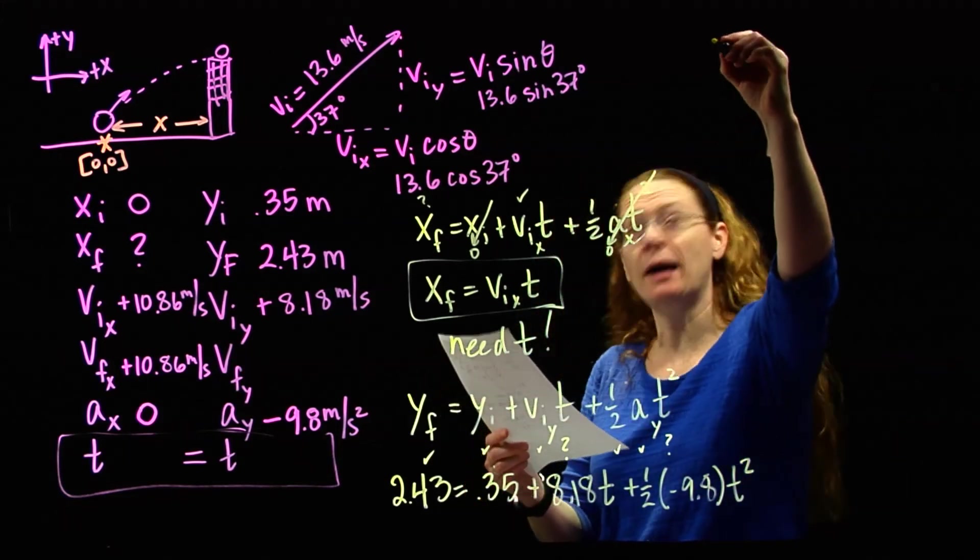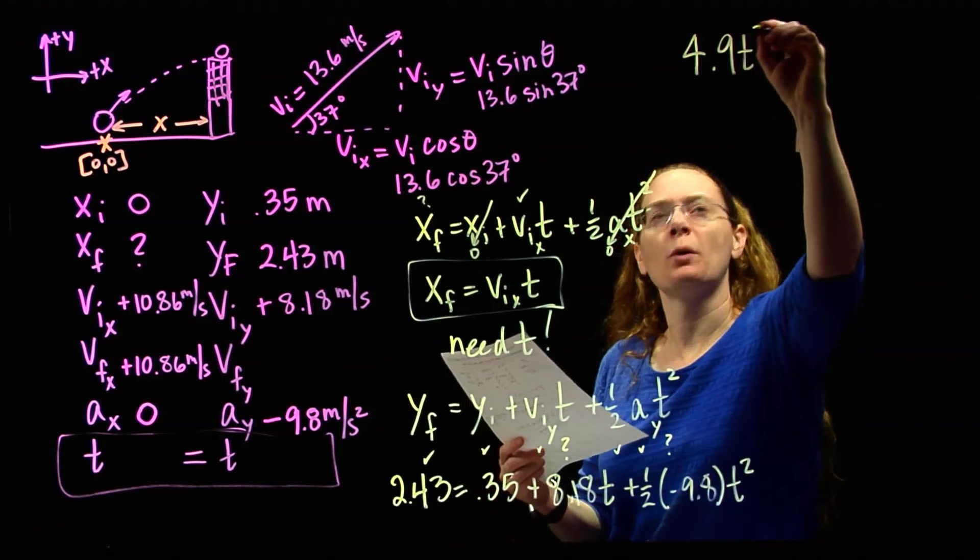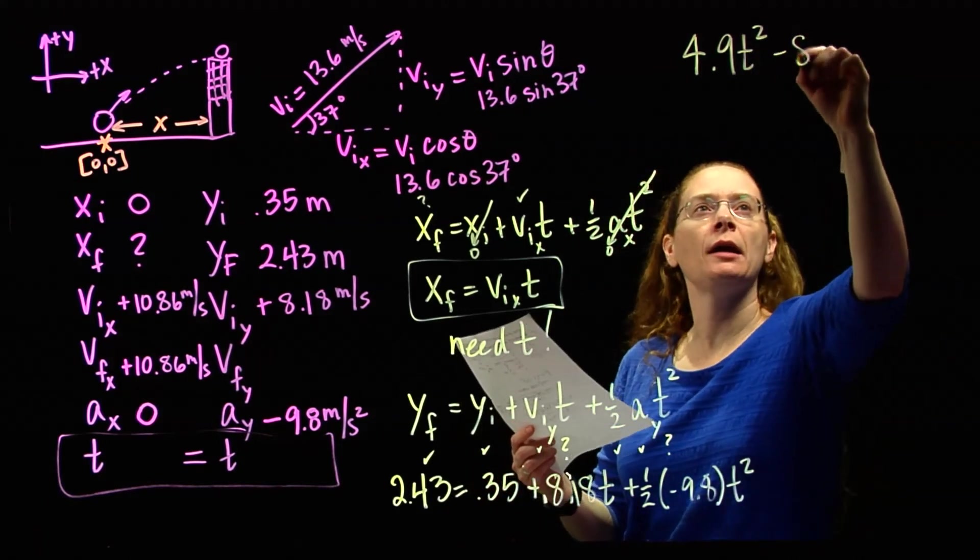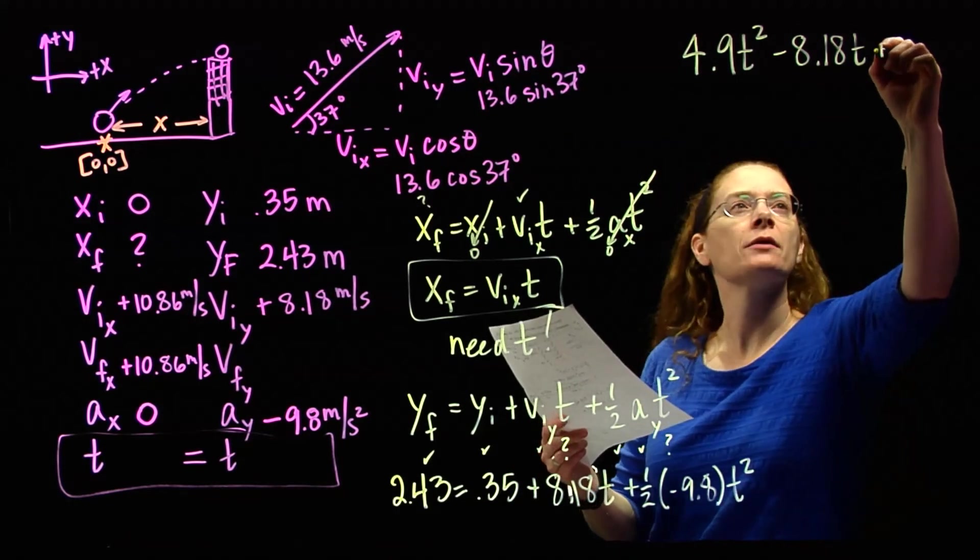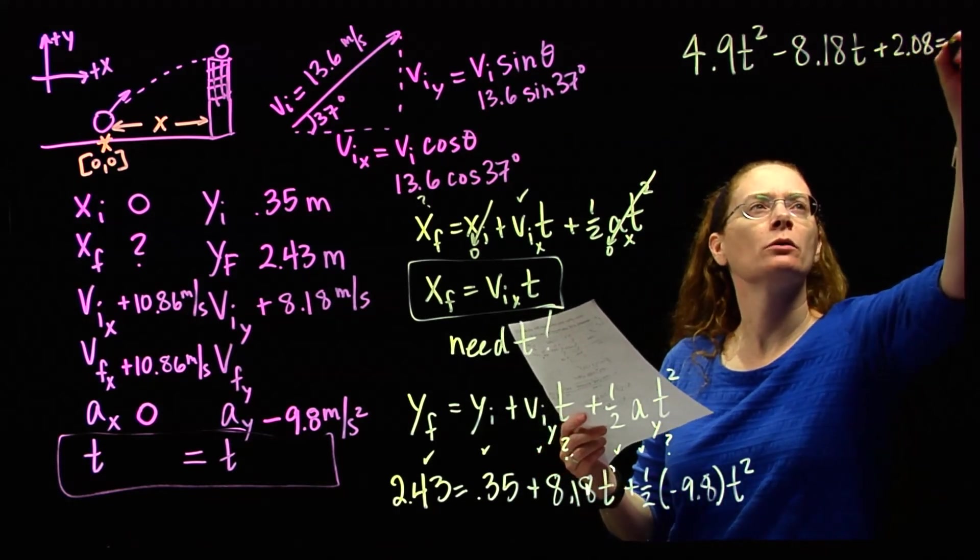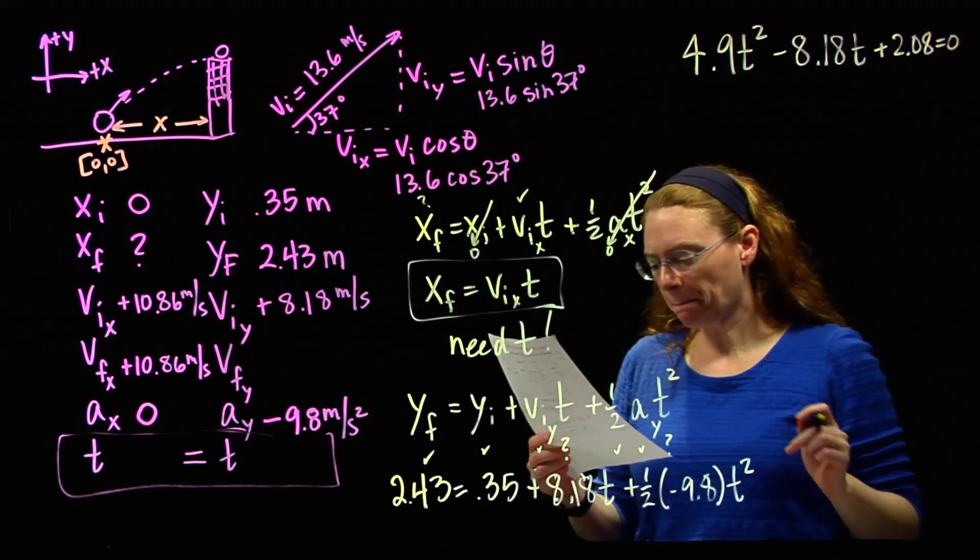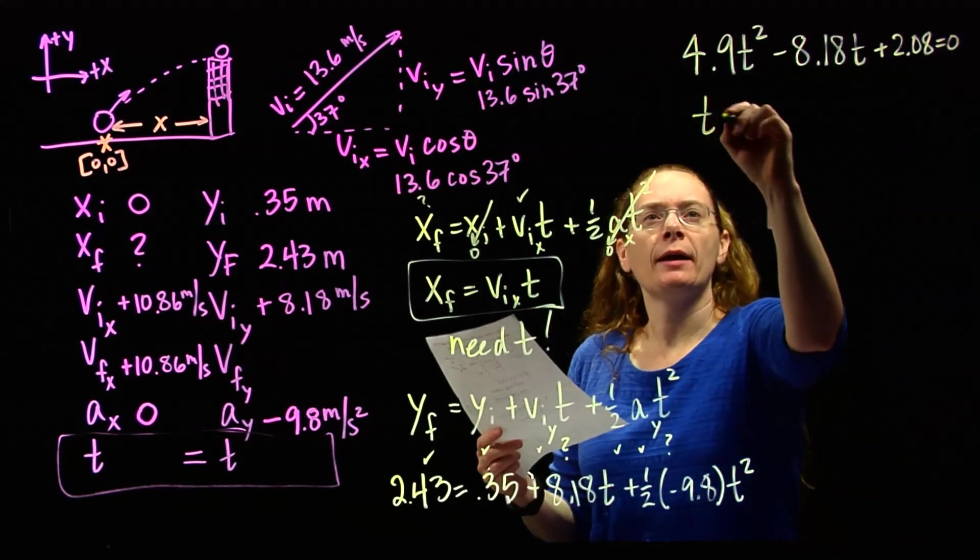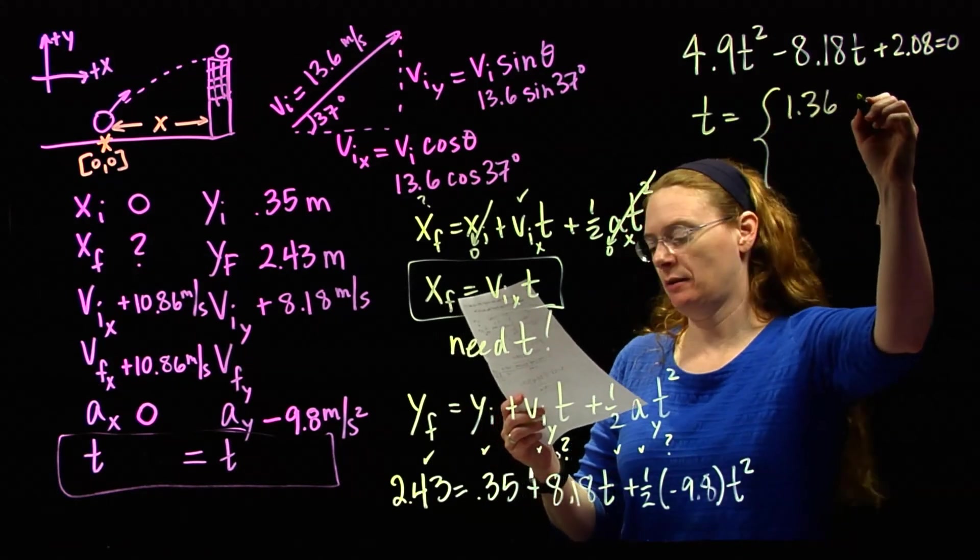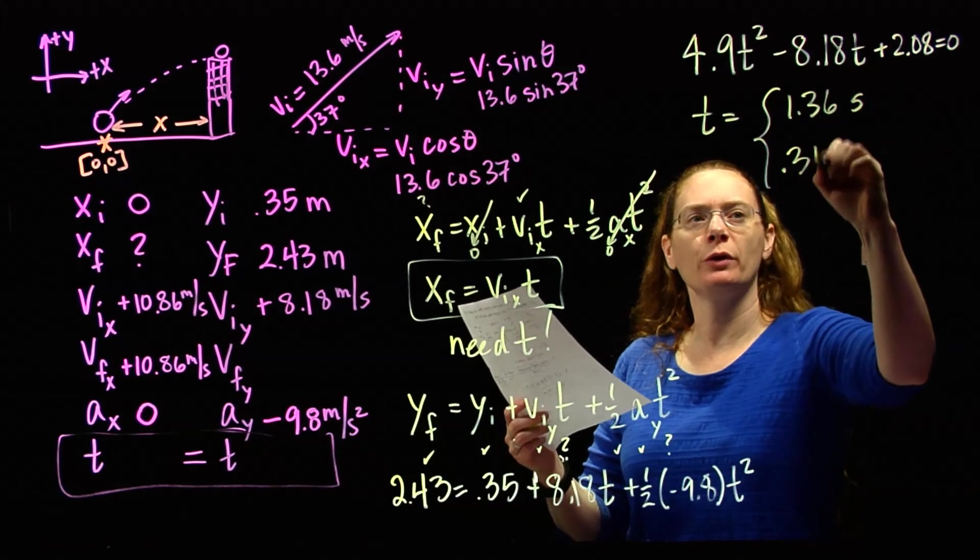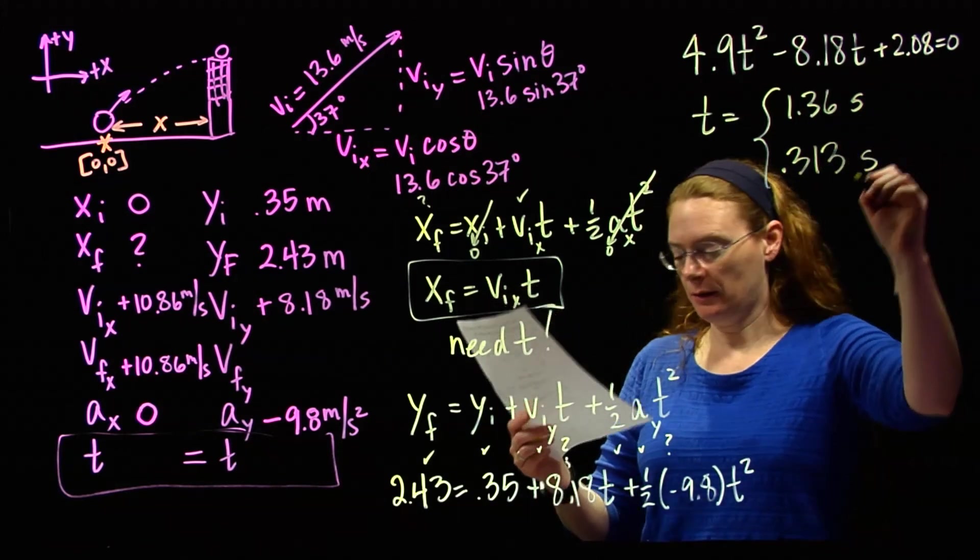So if I rewrite that, I should get 4.9 t squared minus 8.18 t plus 2.08 equals 0. If you do the quadratic, you get two answers: 1.36 seconds and 0.313 seconds.